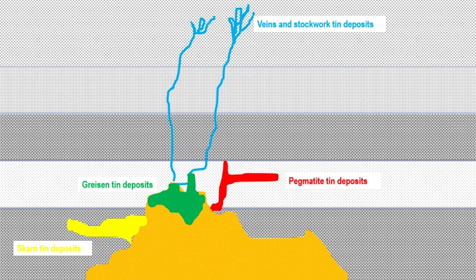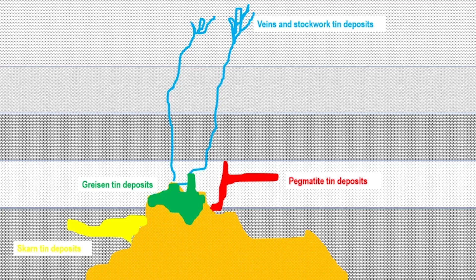The last deposit type we will look at in this video series are tailings deposits. These are secondary tin deposits formed from the processing waste of previous operations, so they don't appear in this diagram.